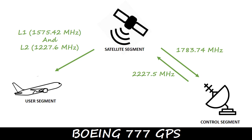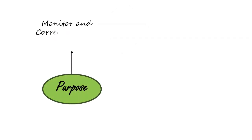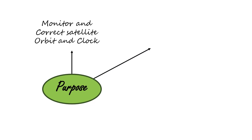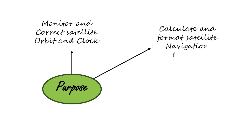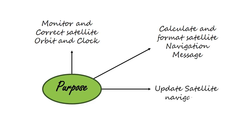Now let us understand the working of the control segment. The control segment has control and monitor stations on Earth that continually monitor and track the satellites. The purpose of the control segment is to monitor and correct satellite orbits and clocks. It also calculates and formats a satellite navigation message, which has up-to-date descriptions of the satellite future positions and a collection of the latest data on all GPS satellites. It also updates the satellite navigation message regularly.